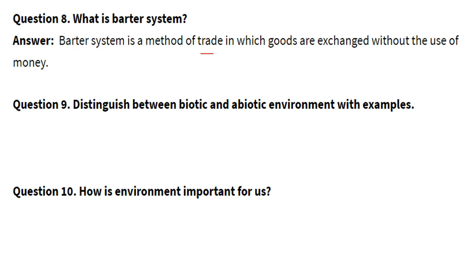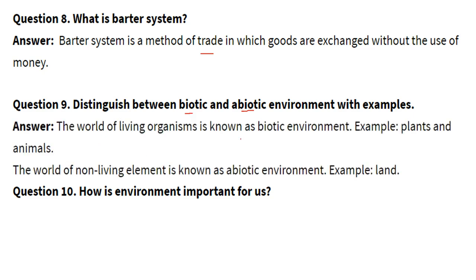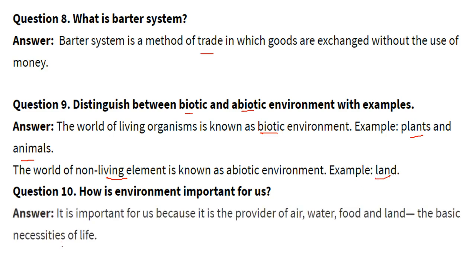Distinguish between biotic and abiotic environment with examples. The world of living organisms is known as the biotic environment — for example, plants and animals. The world of non-living elements is known as the abiotic environment — for example, land. How is environment important for us? The environment is the lifeline. It is important to us because it provides water, air, food and land — these are the basic necessities of life.